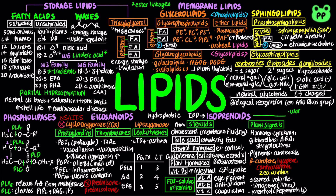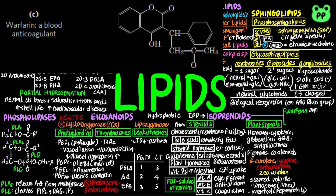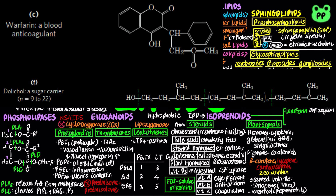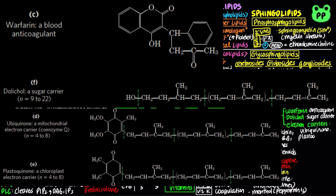Other important isoprenoids include the synthetic anticoagulant warfarin, sold under the brand name Coumadin; the sugar carrier dolichol, which facilitates glycoprotein and glycolipid biosynthesis; and electron carriers in the electron transport chain, including ubiquinone participating in mitochondrial oxidative phosphorylation and plastoquinone in chloroplast photophosphorylation.